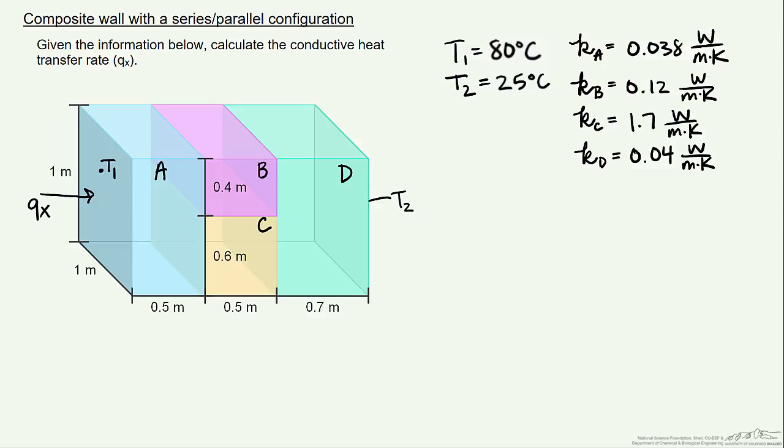In this screencast I'll show you how to solve for the conductive heat transfer rate through a composite wall as shown below. In order to solve using our thermal circuits, first of all we have to assume that the surfaces normal to the x direction are isothermal.